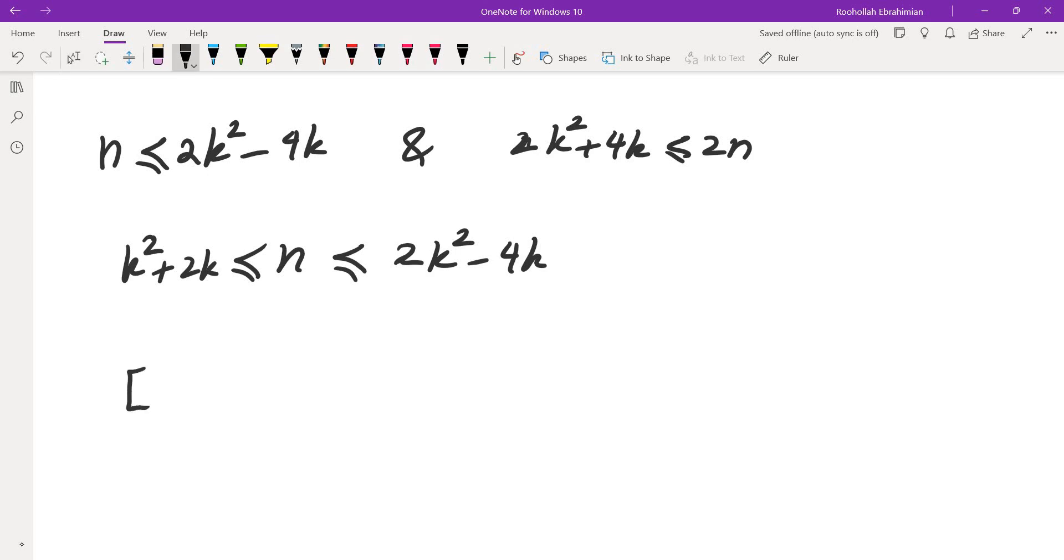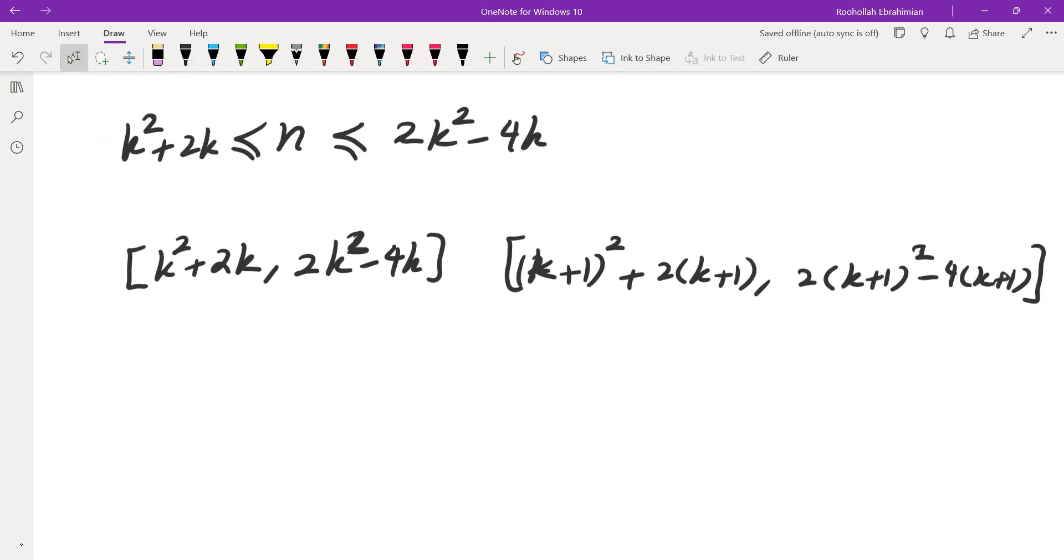If I show that every n satisfies some inequality like this for some k, then I'm done. So we have these intervals, k squared plus 2k, to 2k squared minus 4k. If the next one has an overlap with this one, the next one would be k plus 1 squared plus 2 times k plus 1, 2k plus 1 squared minus 4 times k plus 1. So let's see if there is a common number in here. So what I need is, I need 2k squared minus 4k to be at least k plus 1 squared plus 2 times k plus 1. So if I have this inequality, then I can show that every integer would be in one of these intervals.